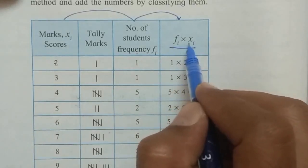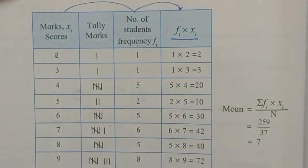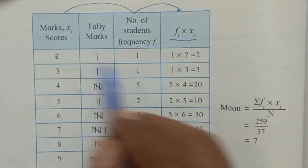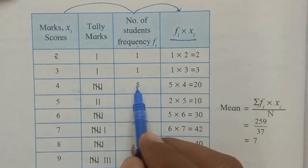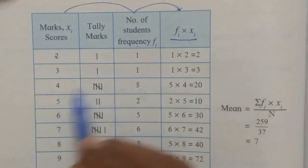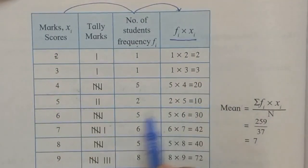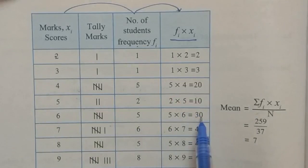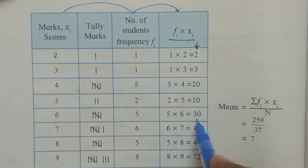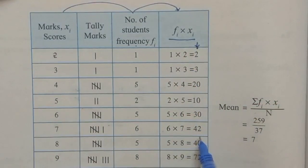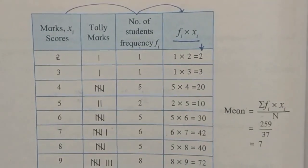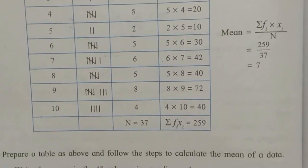Frequency multiplied by score: 1×2=2, 1×3=3, 5×4=20, 2×5=10, 5×6=30. These product values are important for further calculation, done all the way up to score 10.